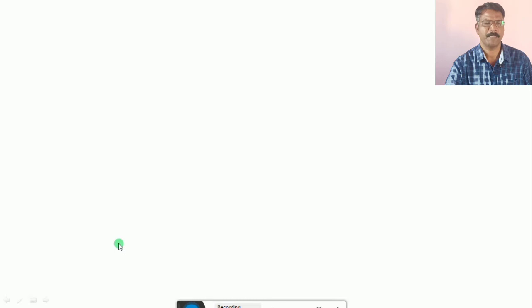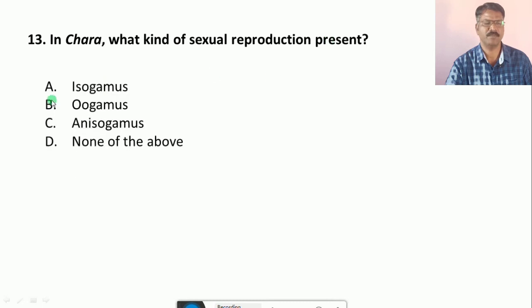Question number 13: In Chara, what kind of sexual reproduction present? A. Isogamous, B. Oogamous, C. Anisogamous, D. None of the above. The correct answer is B, that is Oogamous type of sexual reproduction is present in Chara.